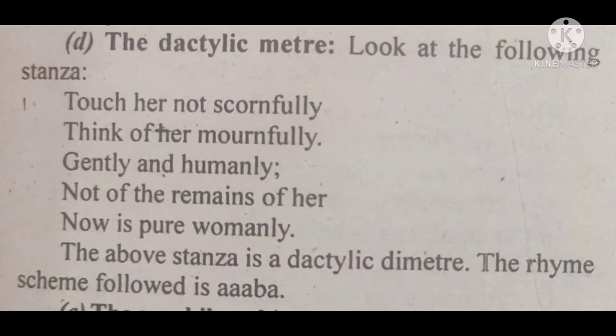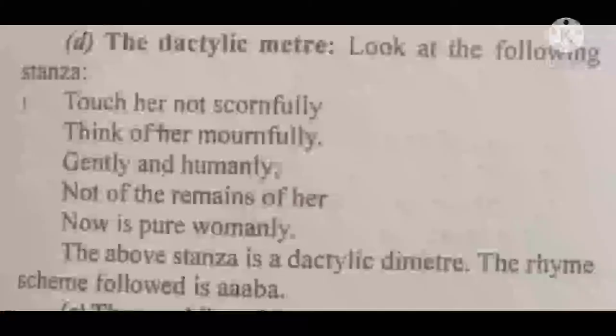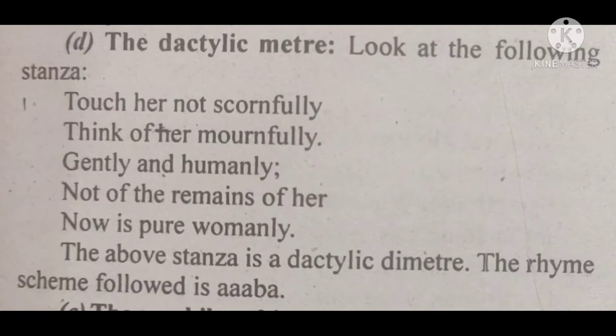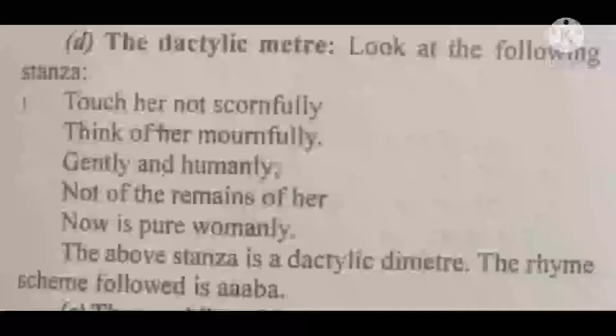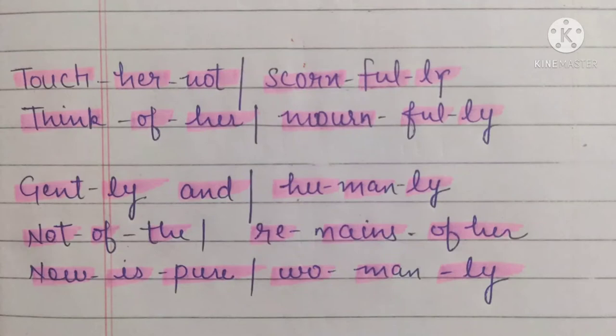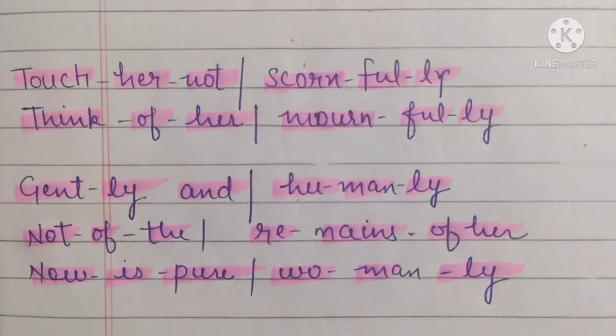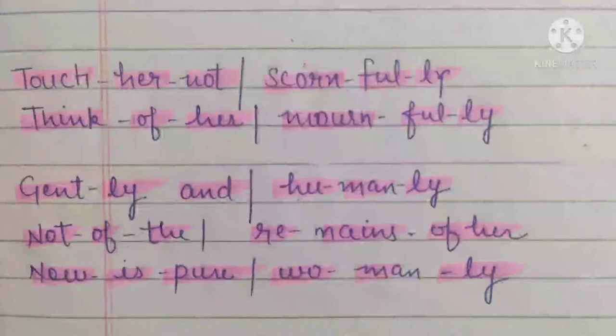Scornfully, mournfully, humanly, and womanly all share the same sound, so they are A, while 'her' is different and is considered B. Now looking at stressed and unstressed syllables: 'touch' is stressed and 'her not' is unstressed. 'Scorn' is stressed and 'fully' is unstressed. 'Think' is stressed and 'of her' is unstressed. 'Mourn' is stressed and 'fully' is unstressed — same pattern for the next three lines.